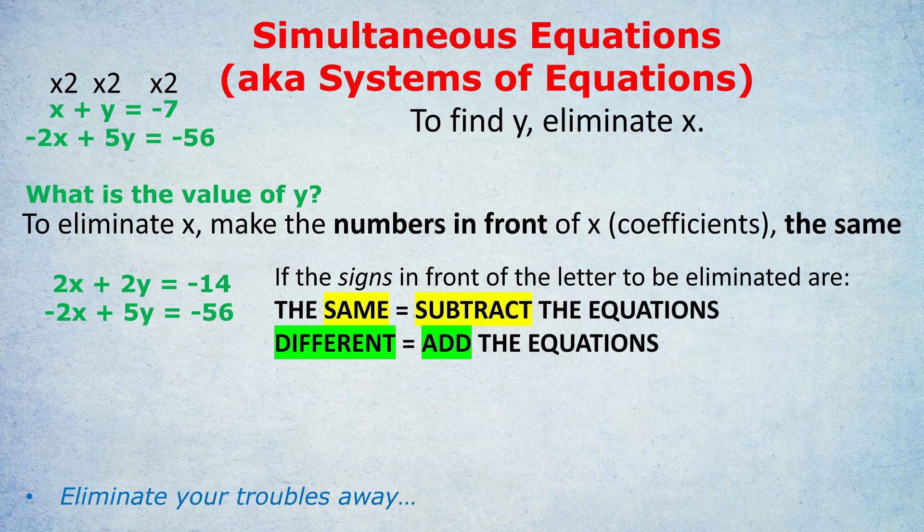If we add those two equations, look what happens. 2x on the top plus minus 2x on the bottom becomes zero. They cancel out if you add the two equations. Just look vertically for how to add. We're literally doing 2x plus minus 2x and that becomes zero cancels out. 2y plus 5y is 7y, minus 14 plus minus 56 is minus 70. So notice that we don't even bother writing 0x. They've been eliminated. The 2x plus minus 2x disappears. 2y plus 5y is 7y, minus 14 plus minus 56 is minus 70. And now at this point, we could divide by 7. So y is minus 10.